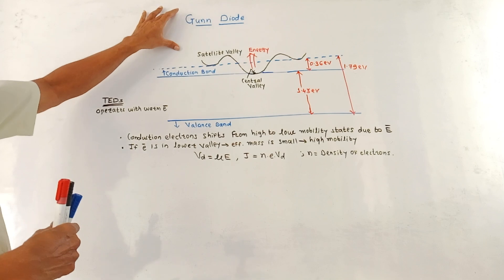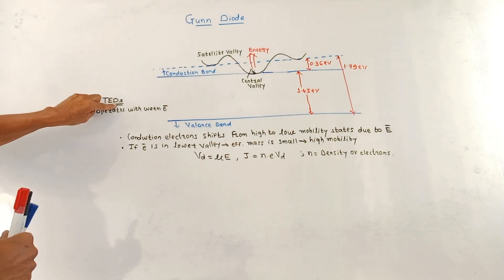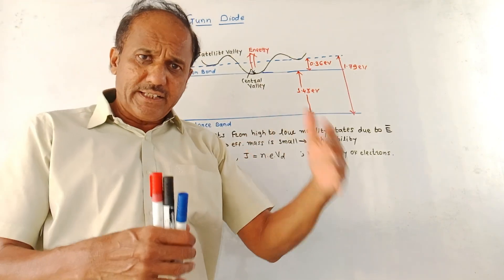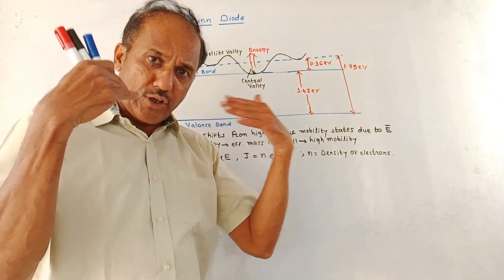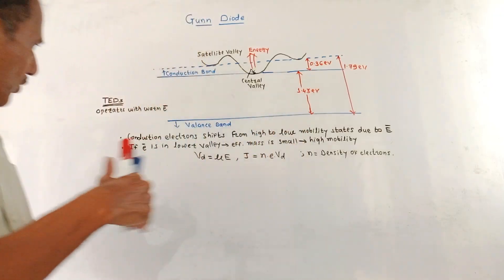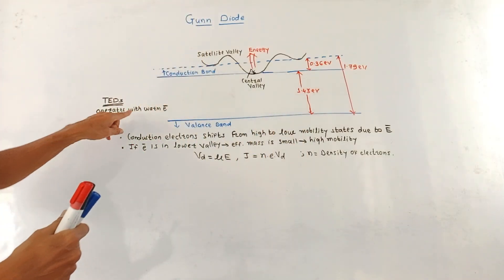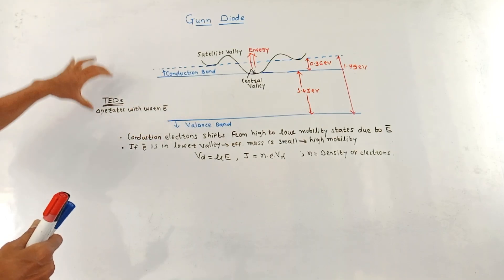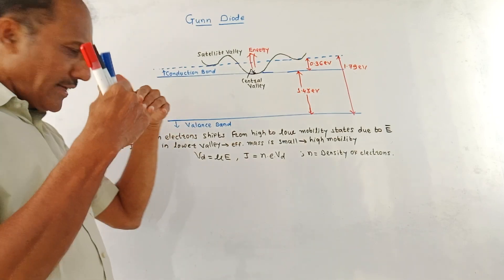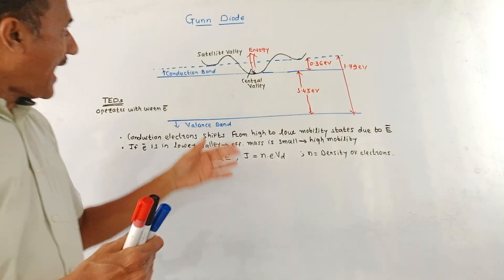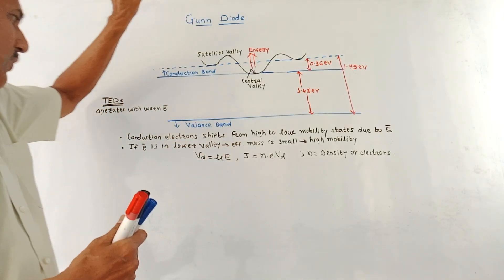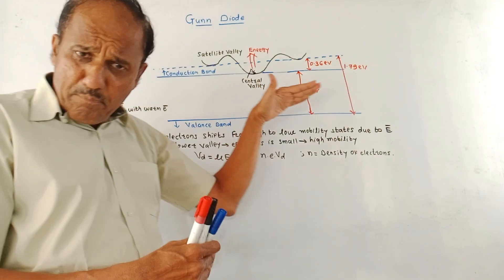A gun diode is a type of device called TED — Transferred Electron Devices. Such devices have no junctions or gates, but operate with warm electrons. 'E-bar' stands for electrons. A good example of a TED is a gun diode.